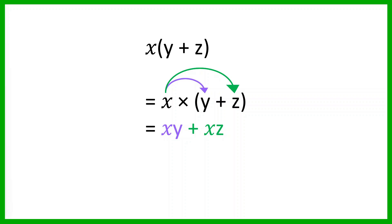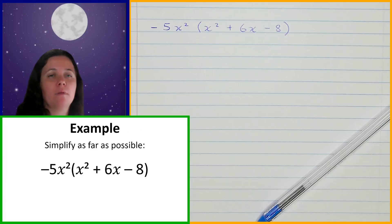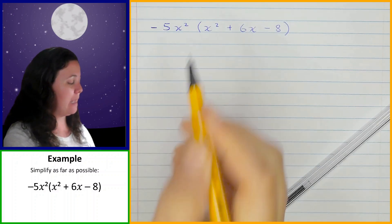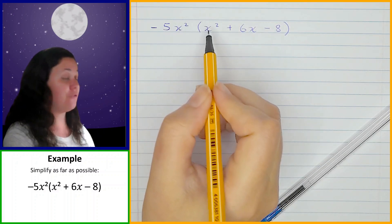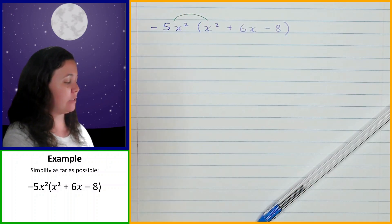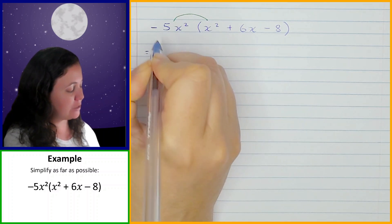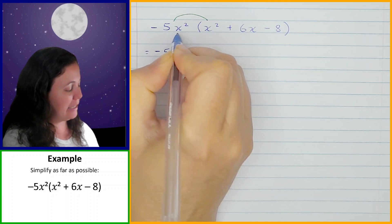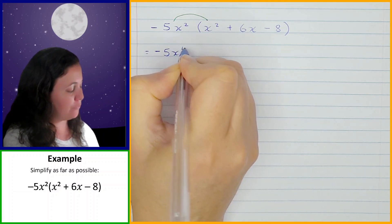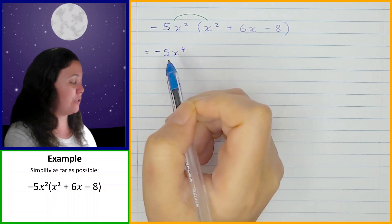Let's have a look at our first example. We've got negative 5x squared multiplied by, in brackets, x squared plus 6x minus 8. I'm going to start by multiplying the negative 5x squared by the first term, x squared. So negative 5x squared times x squared gives negative — because it's negative times positive — 5, and then x squared times x squared is x to the power of 4. When you multiply powers on the same base, you add the exponents and the base stays the same.